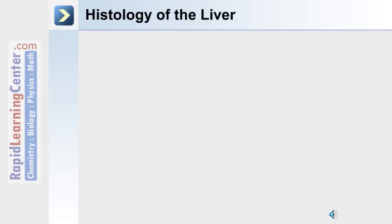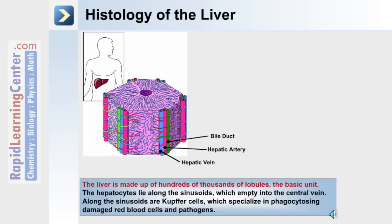The basic unit of the liver are lobules, and the liver contains hundreds of thousands of them. Shown in the diagram is the arrangement of a lobule, with the bile duct, hepatic artery, and the hepatic vein. The hepatocytes lie along the sinusoids, which empty into the central vein.